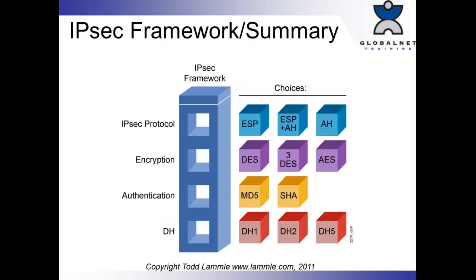Look at our framework here — you will choose one from each category. For IPSec protocol: ESP, Authentication Header, or both. For encryption: DES, Triple DES, or AES — AES is kind of a no-brainer today. For data integrity: MD5 or SHA — SHA is better. And for key exchange: Diffie-Hellman — the higher the group number, the larger the key. That's how we do the key exchange. It's very important to understand. Let me go over some scenarios and a summary.